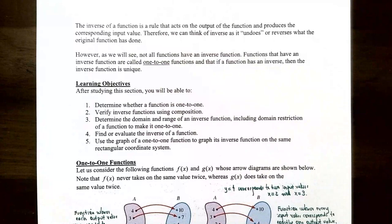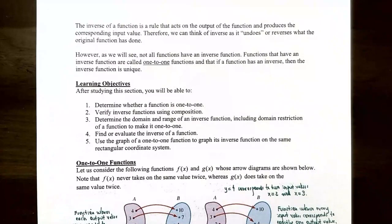In mathematics, we know many different types of inverse operations. We have addition and subtraction, because subtraction will undo addition and vice versa, and we also have multiplication and division, roots and exponents. The inverse function is just a rule that acts on the output of a function and produces the corresponding input value. You can think of inverse as it's undoing what the original function did.